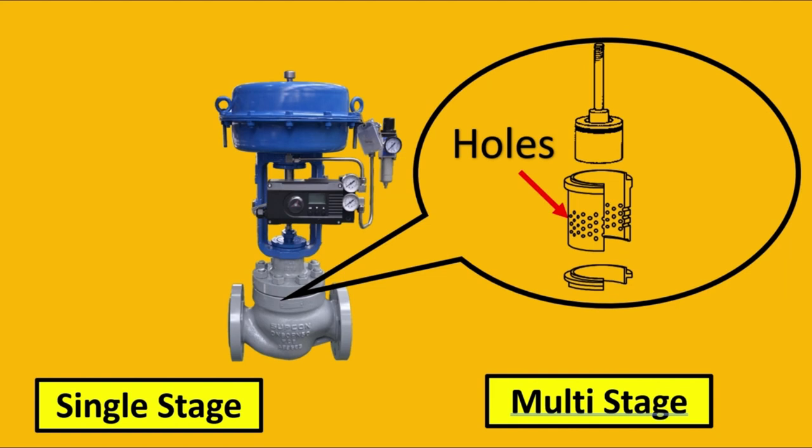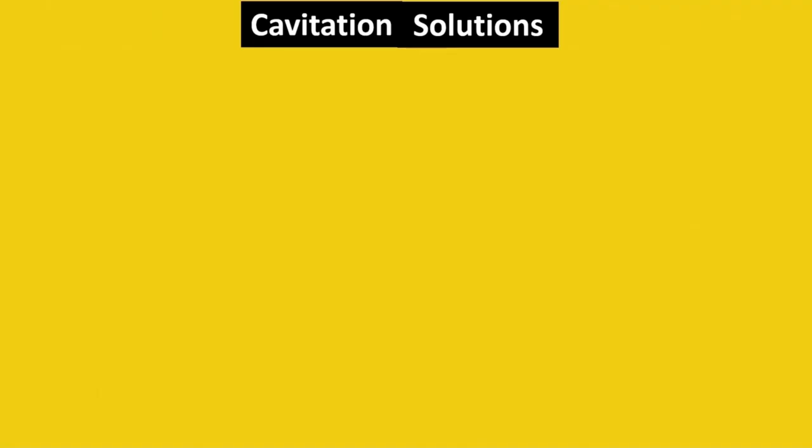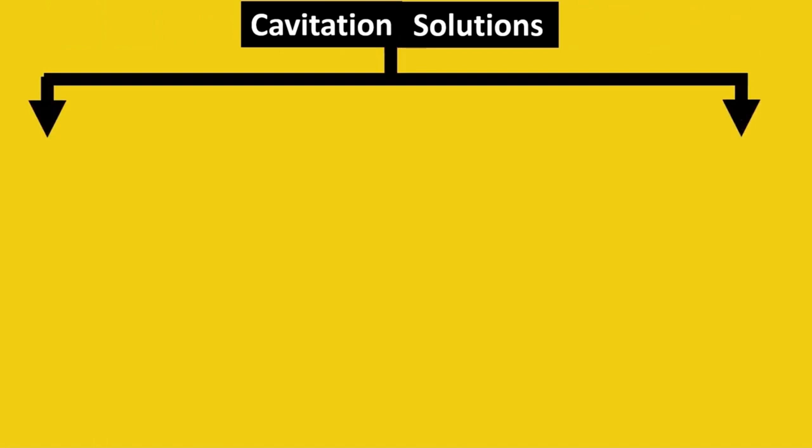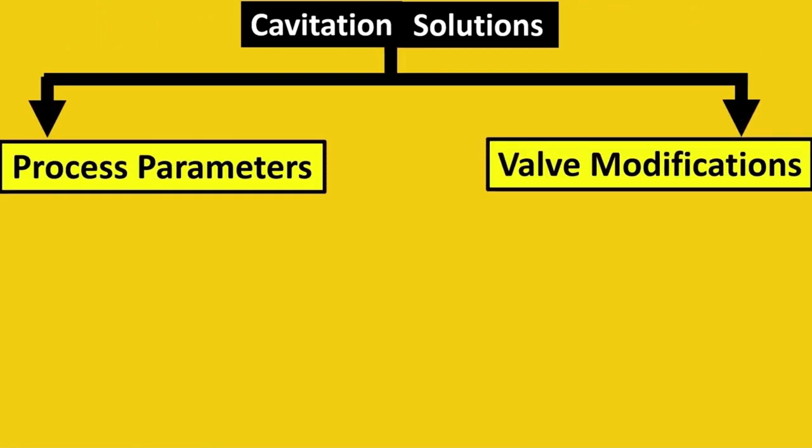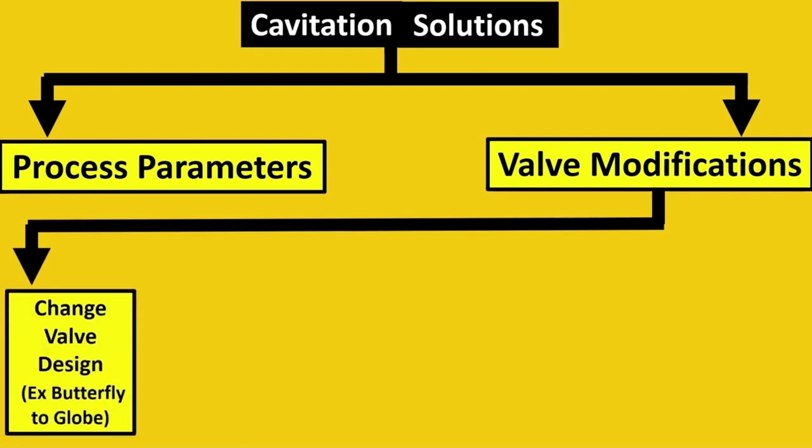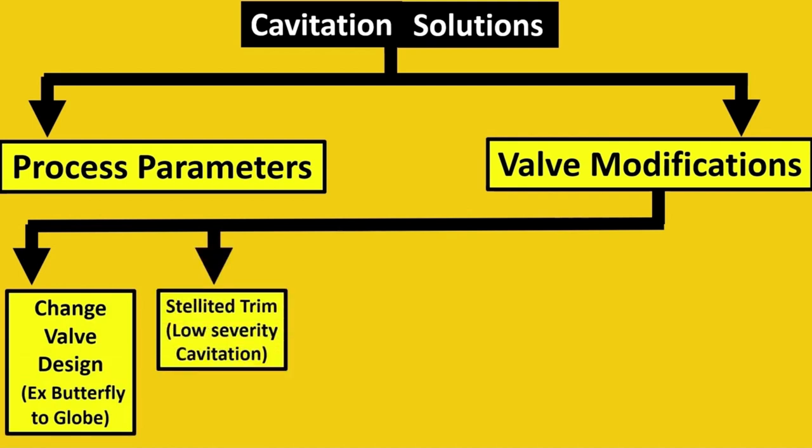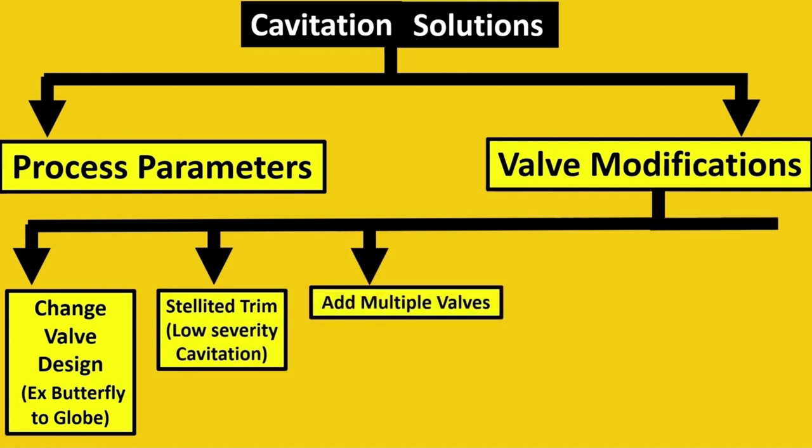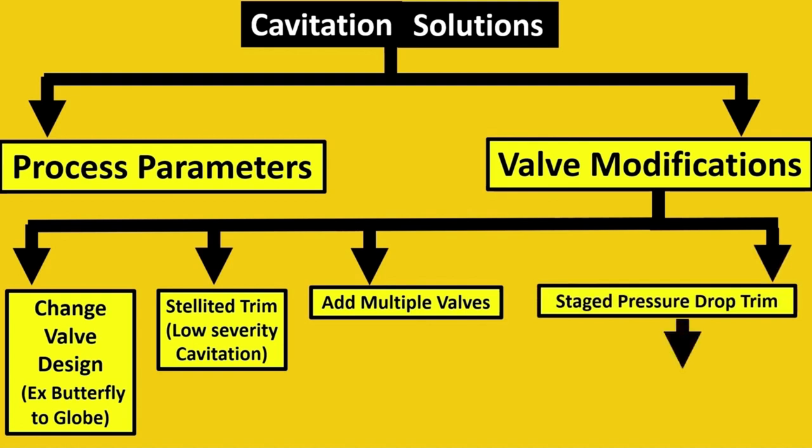For cavitation solutions, there are process parameters and valve modifications. For valve modifications: first is changing valve design - butterfly has one pressure drop point, but globe has multiple, so globe is better. Second is stellited trim, where you harden the trim material for low severity cavitation so it can sustain damage longer. If that's not working, go for multiple valves, or if that's an issue, go for staged pressure drop trim which can be single-stage or multi-stage.